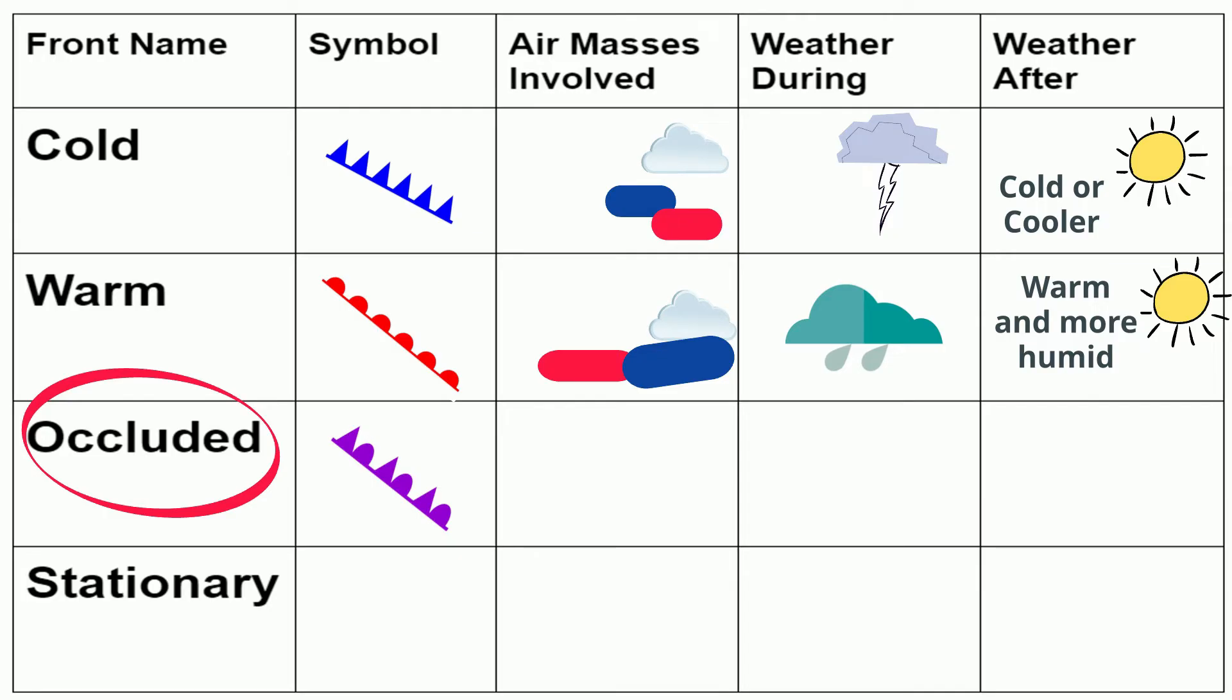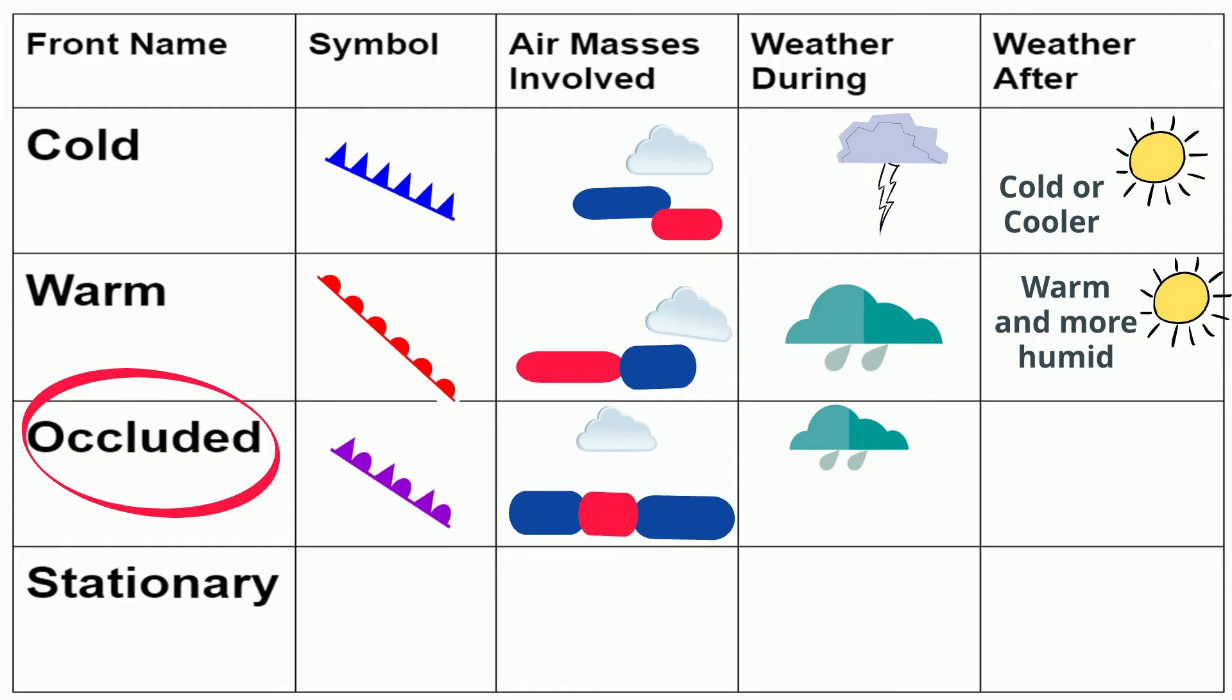An occluded front has three air masses involved. Warm air gets caught between two cold or cooler air masses. Along an occluded front you can see rain or snow and it may be heavy or this front may have weather similar to a cold front which will include thunderstorms. After an occluded front passes you will have fair skies and cooler air.